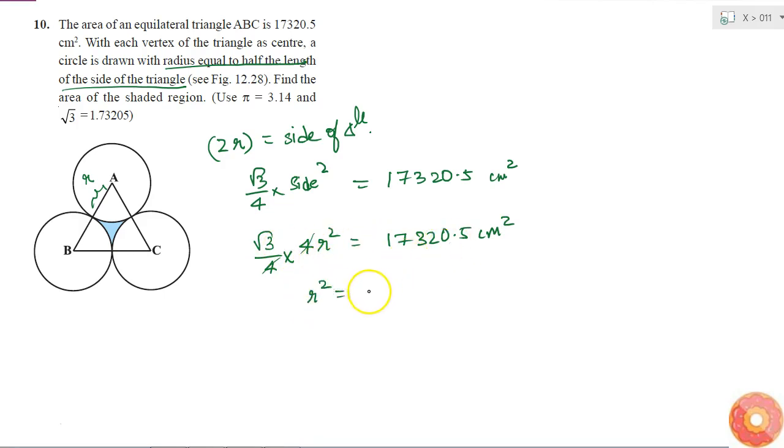So, what is R square? 17320.5 divided by root 3. It is given to me that root 3 value is this. So, if I put it 17320.5 divided by 1.7320.5. So, what is that? This is simply 10,000 times. 10,000 times of root 3 is this.